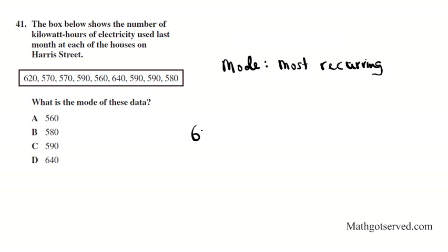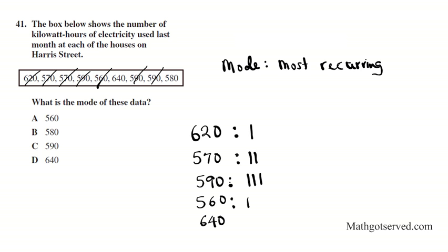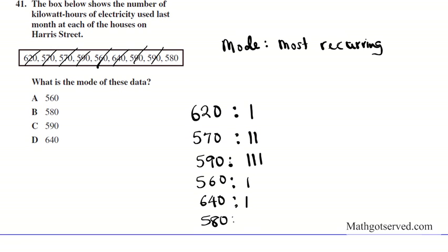So what we're going to do is we're going to tally the number of each element of this set and see which one repeats the most. Mode is another word for most. So let's start with 620. We have 1. For 570 we have 2. 590s, we have 1, 2, 3. We have 3 590s. 560 we have exactly 1. 640 we have exactly 1. And 580 we have exactly 1. So which one occurs the most? The one that occurs the most is 590. So our answer for 41 is Option Letter C.